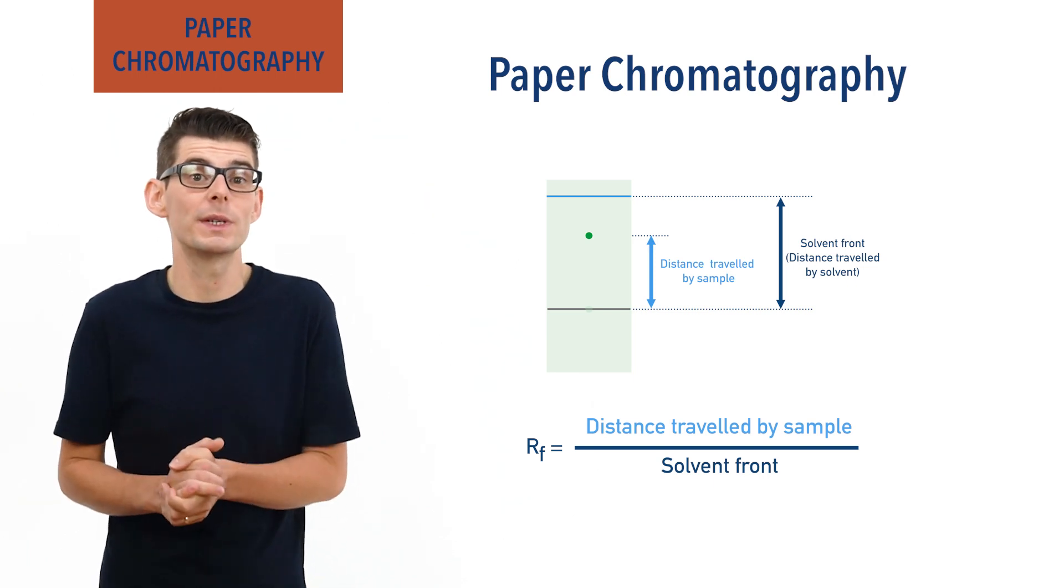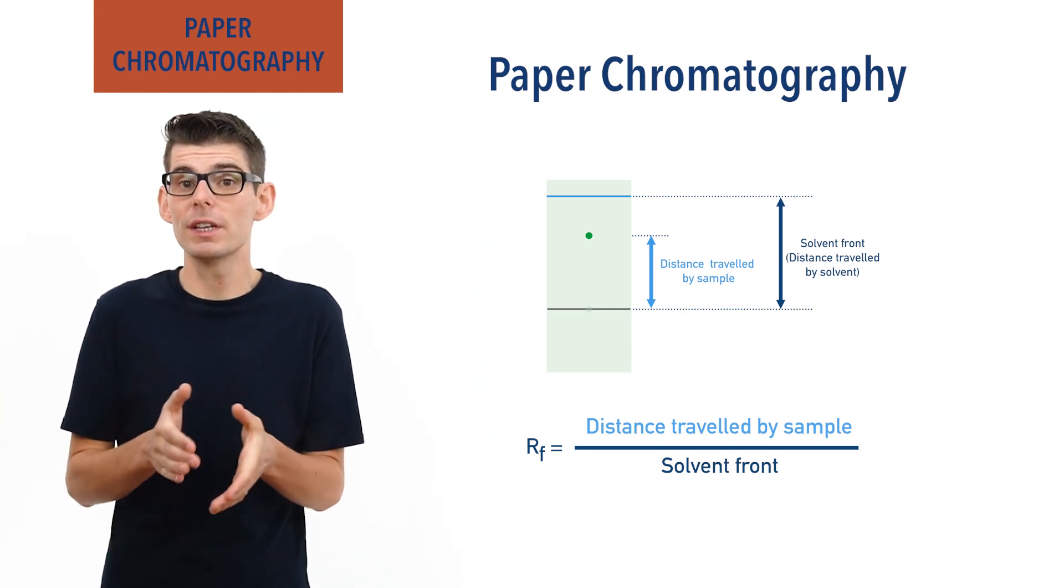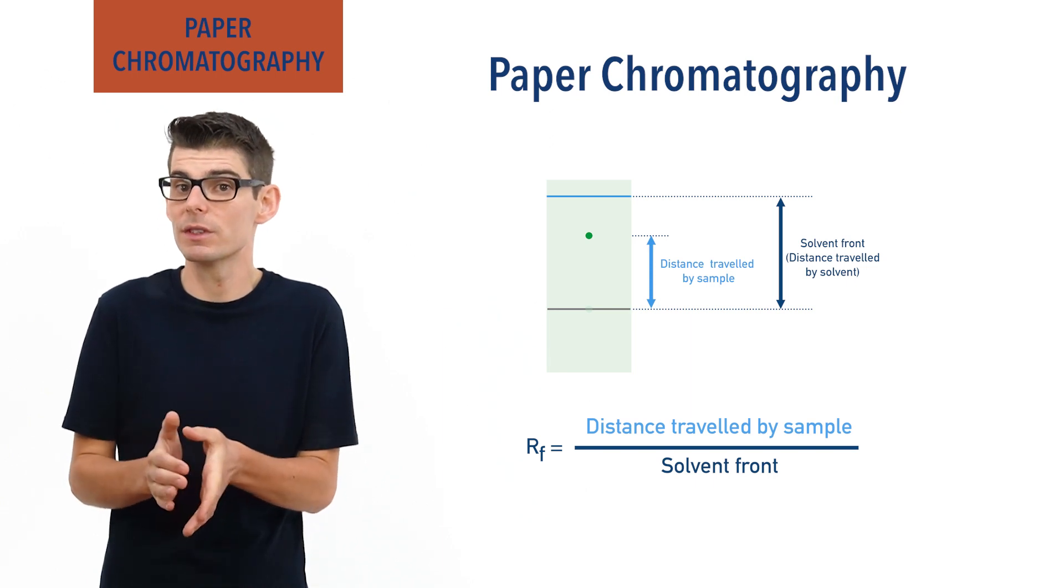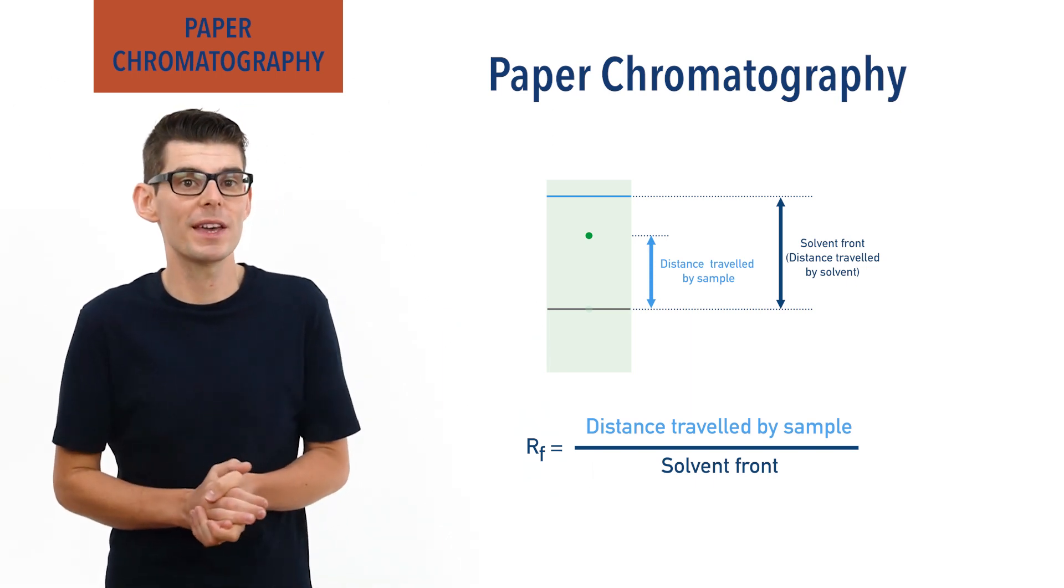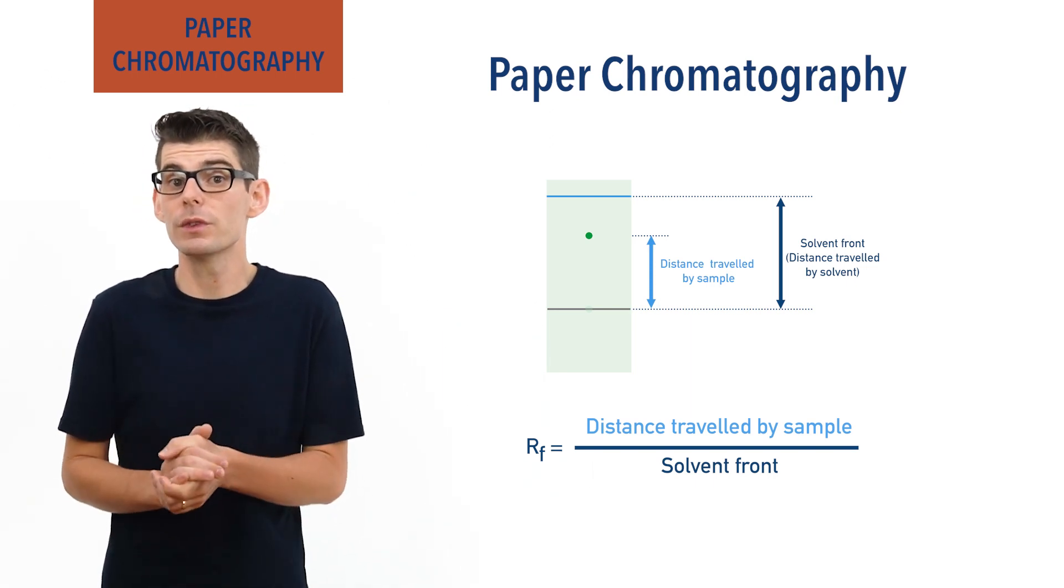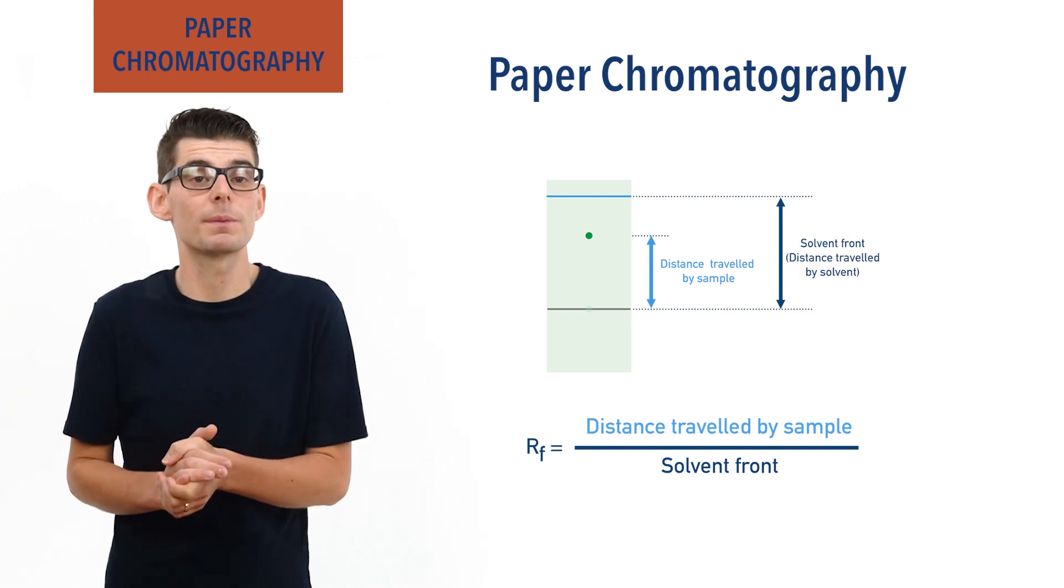RF values will always be between 0 and 1, and the greater an RF value, the greater the affinity the substance has for the mobile phase. Different solvents can be used depending on the substances being studied.